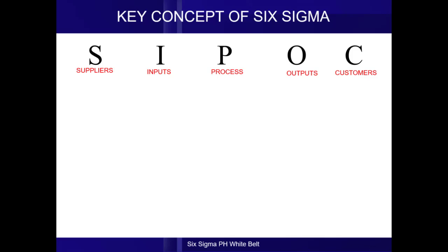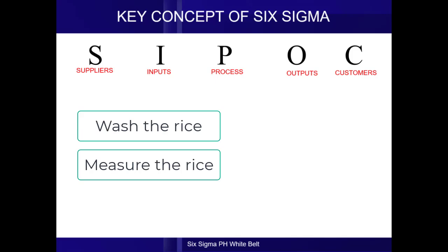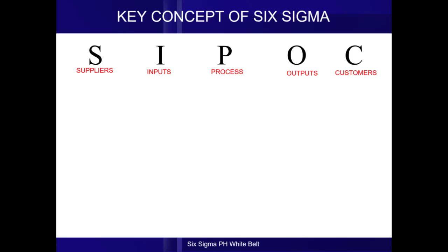Let's go back to our process, which is how to cook rice. If I ask you what is the first step when you cook rice, some of you might say wash the rice, some might say measure the rice, some might say buy rice, and some might even say plant rice. When you facilitate a process mapping session, you will realize that different persons, especially if they come from different departments, have different perspectives of the process.